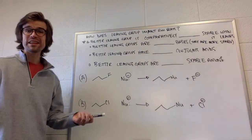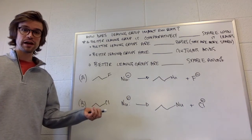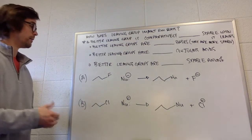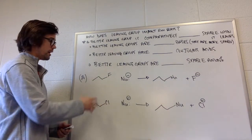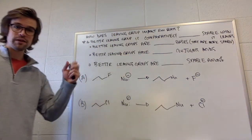So first of all, what is a leaving group? The leaving group is whatever leaves the organic molecule. So in these examples down here, fluorine and chlorine are the things that left, they are the leaving group.